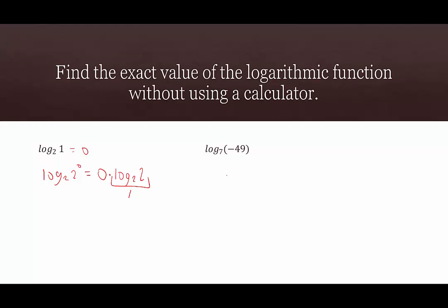In our next example, we have log base 7 of negative 49. Our goal would be to write negative 49 as a power of 7, but that's not possible because the powers of 7 are always positive. So there is no exact value — the argument must be positive.